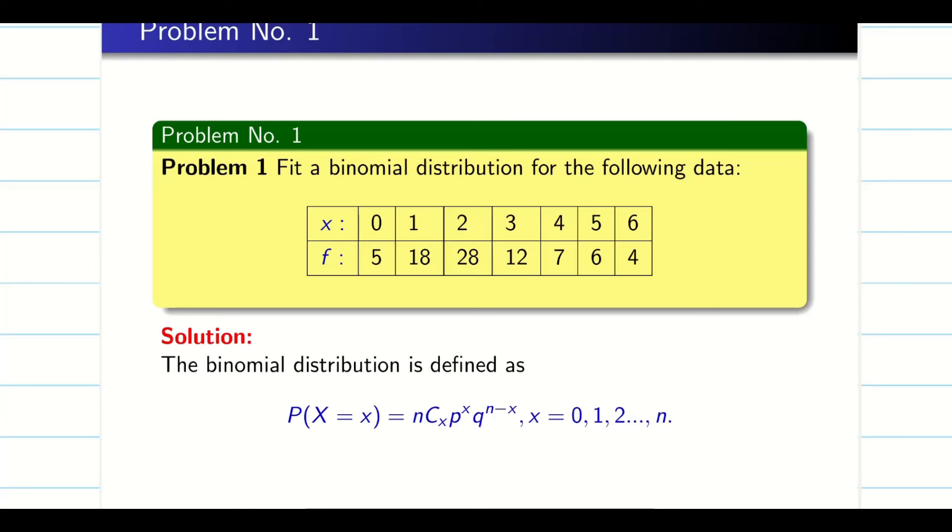Now, many students will have a lot of confusions. What is the N? N is the number of trials and X is the chances. Just now I said, five working days will have possibilities 0, 1, 2, 3, 4, 5.